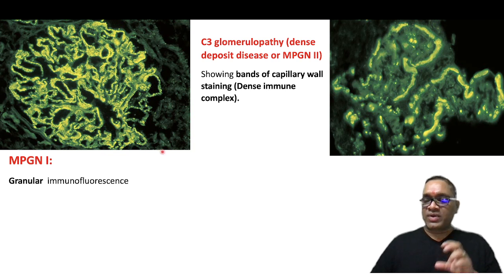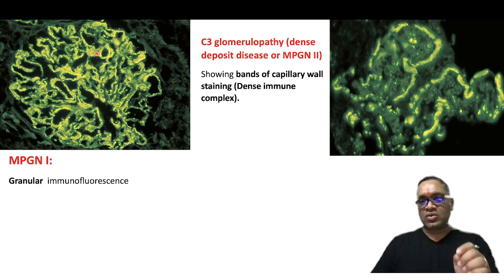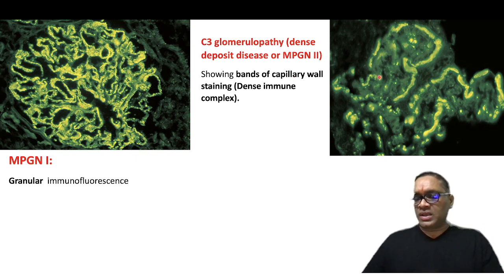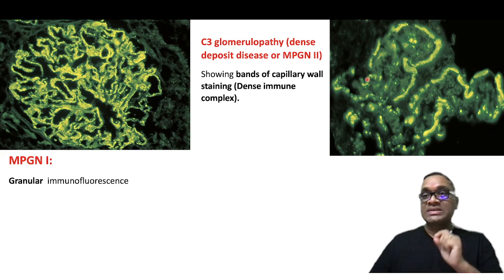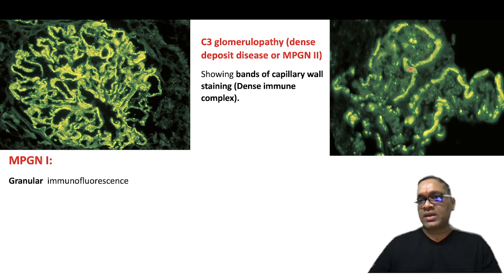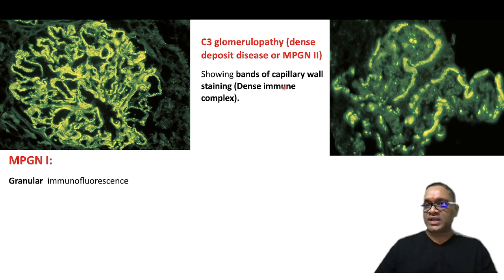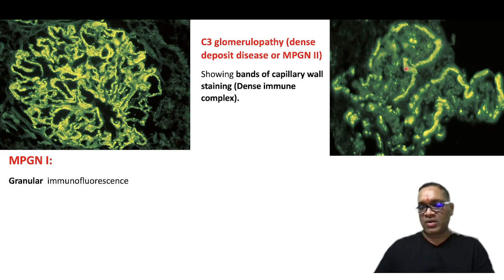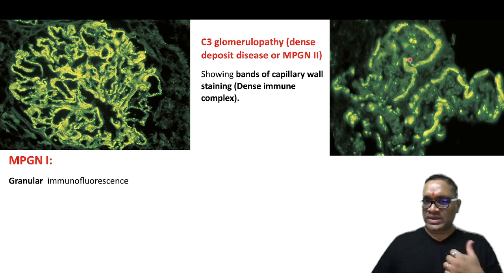As immune complex mediated disorders, MPGN types show granular immunofluorescence. MPGN type 1 shows a heterogeneous granular appearance with yellow-green granules present in the capillaries. MPGN type 2, also called C3 glomerulopathy or dense deposit disease, shows a band pattern of immunofluorescence — bands of capillary wall staining — due to the high quantity of dense immune complex deposits.